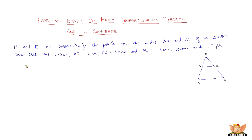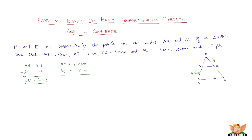We have AB equal to 5.6 centimeters and AD equal to 1.4 centimeters. DB is nothing but AB minus AD, which gives us 5.6 minus 1.4 equals 4.2 centimeters. We also have AC equal to 7.2 centimeters and AE equal to 1.8 centimeters. Subtracting AE from AC gives us EC equal to 7.2 minus 1.8, which is 5.4 centimeters. So we now have all the data.